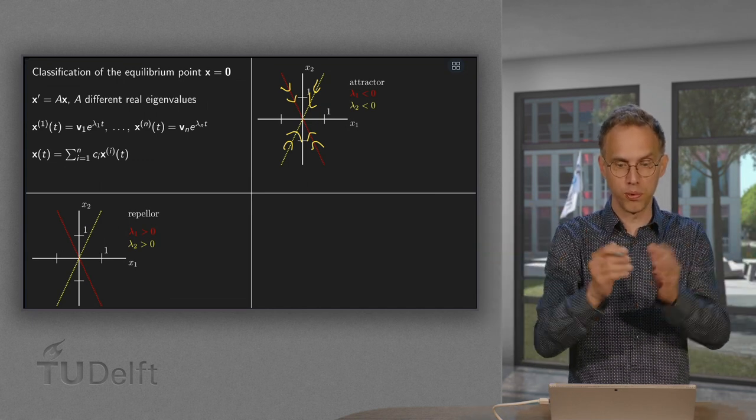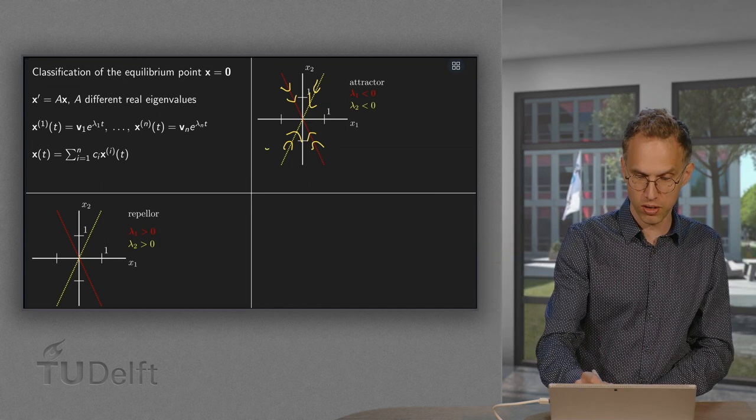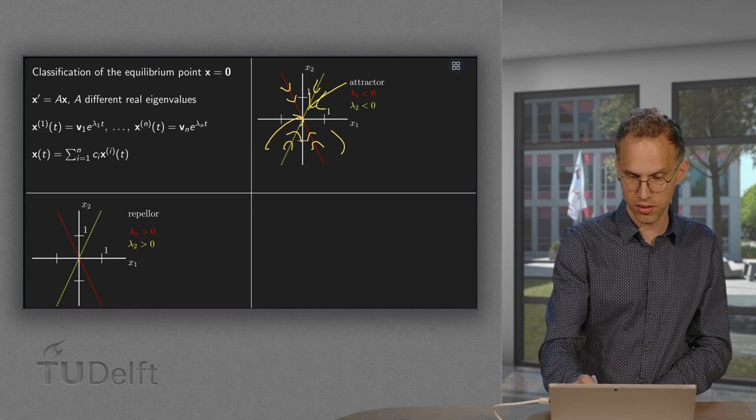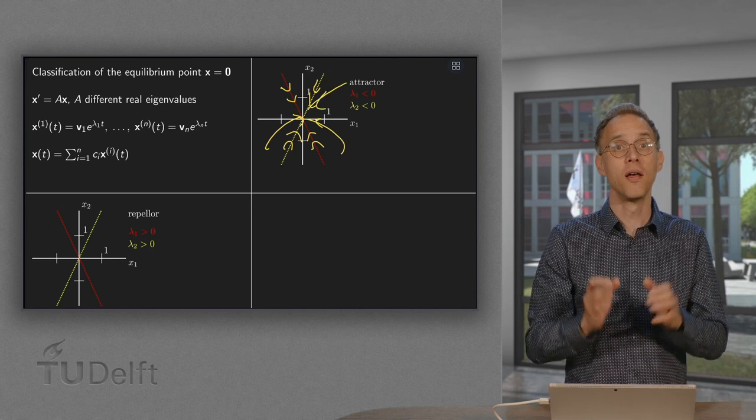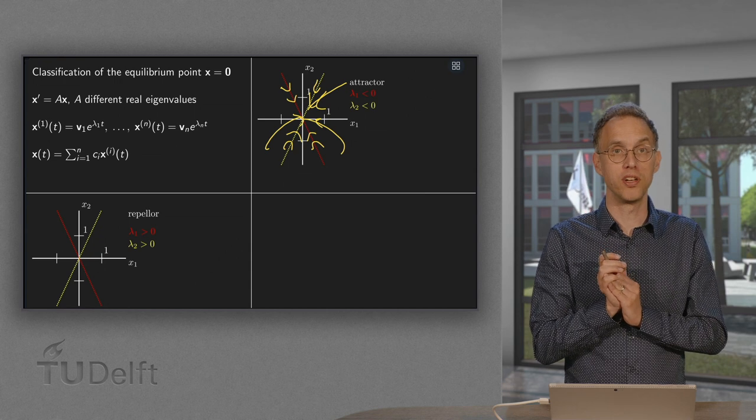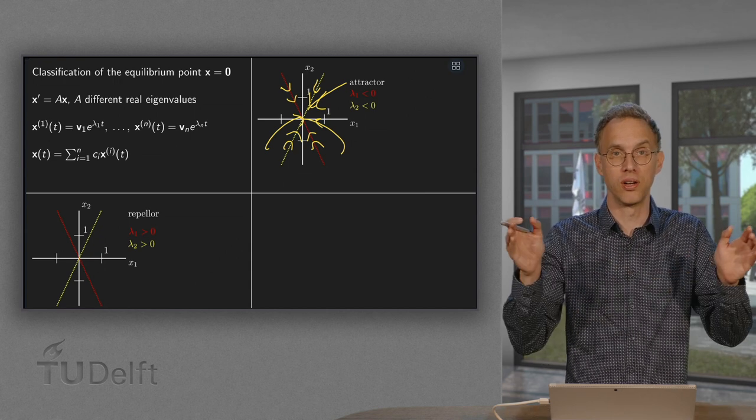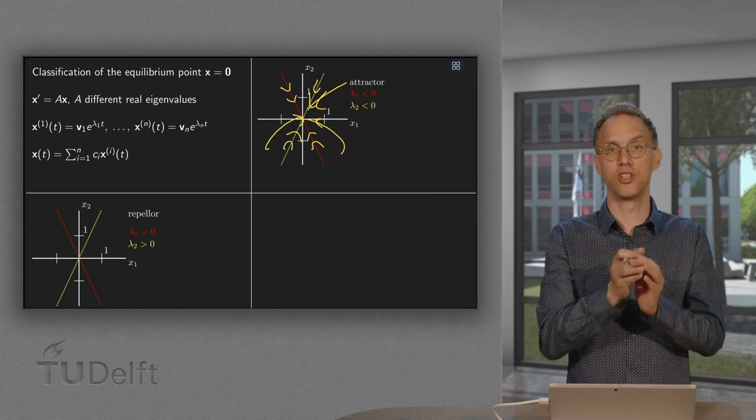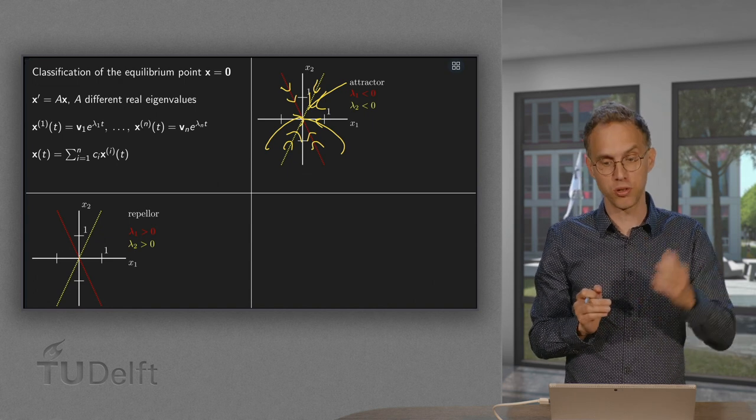you will always be pulled in towards the origin. So something like this, something like this, something like that, and such an equilibrium point is therefore called an attractor because everything is attracted towards the origin. That's also a possibility.